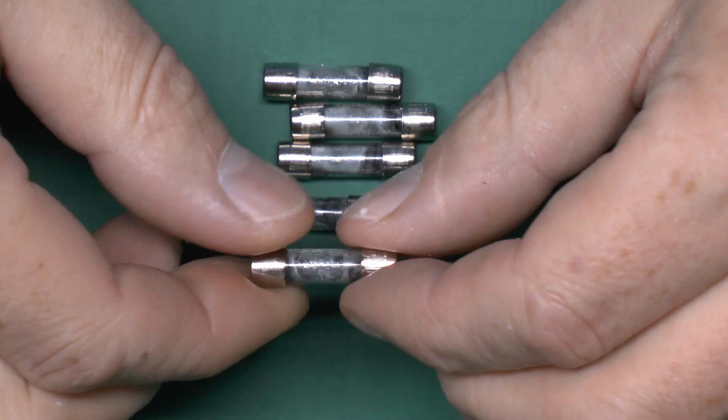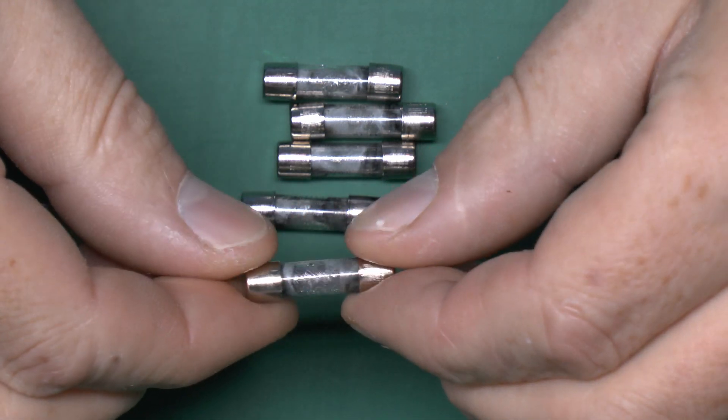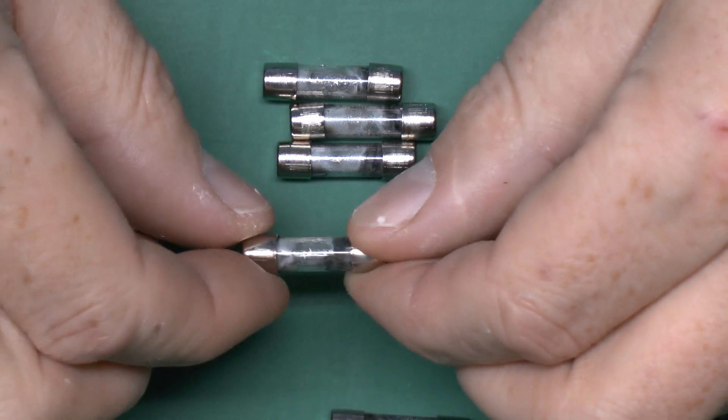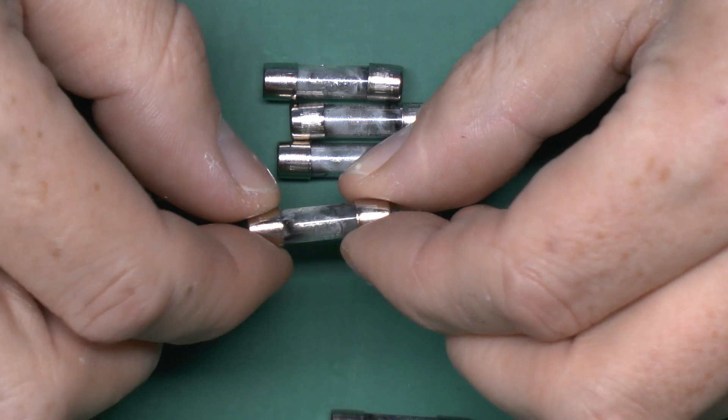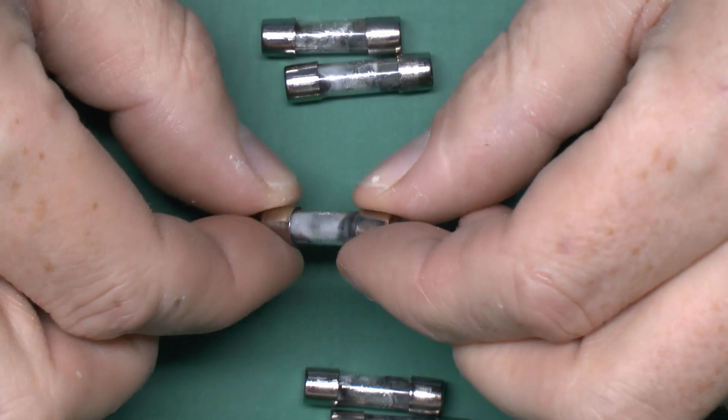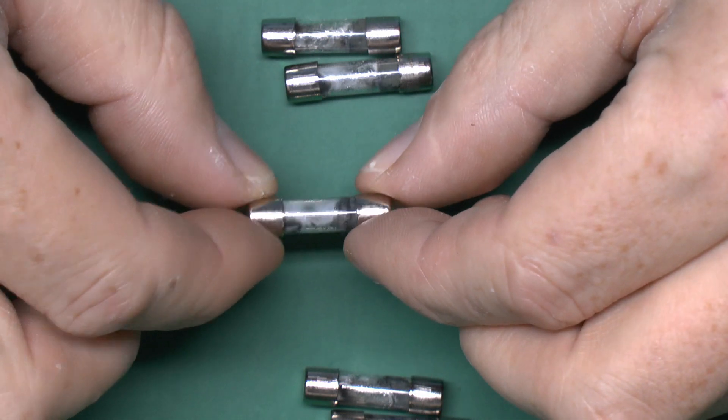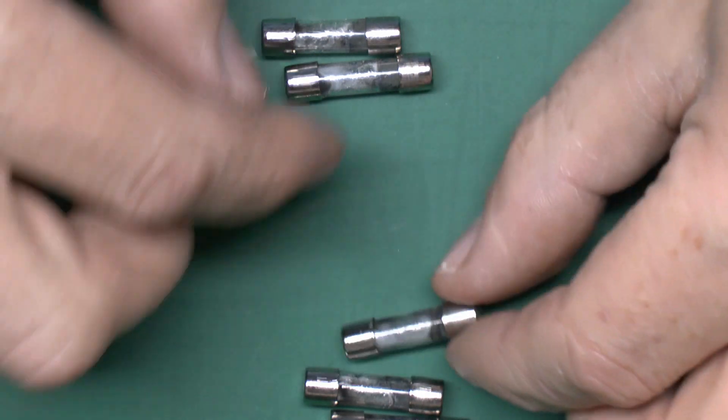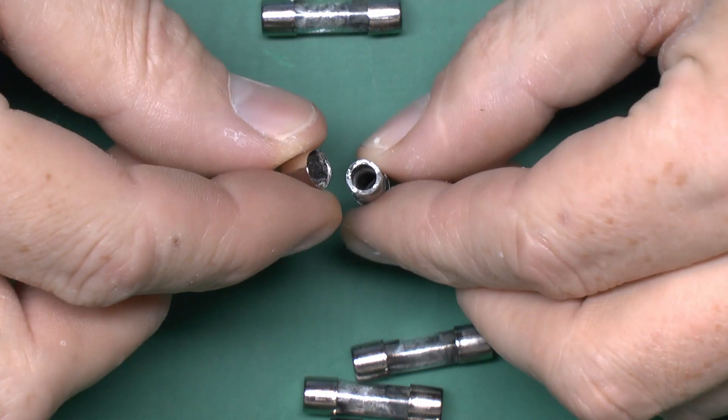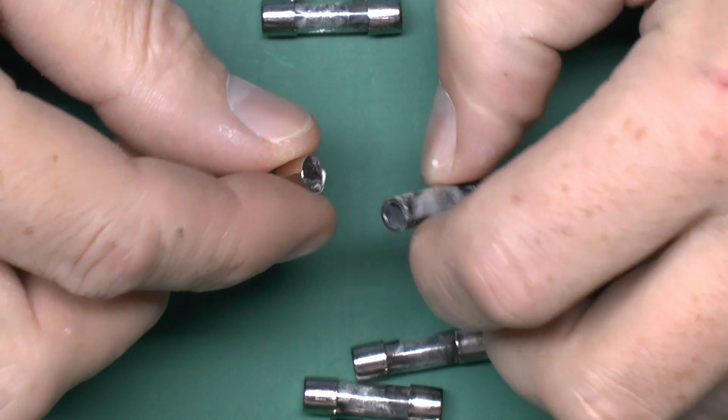But most of them aren't too bad. I mean this one is reasonably still intact there. As is this one. They've all got various degrees of splattered wire on the inside. And again that one's almost the same. Sort of a whitish deposit on that side and more black on the other. This particular one the end has actually come off. So of course you can see inside there's nothing left in there.